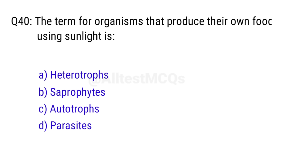Q40. The term for organisms that produce their own food using sunlight is? Right answer is option C, autotrophs.